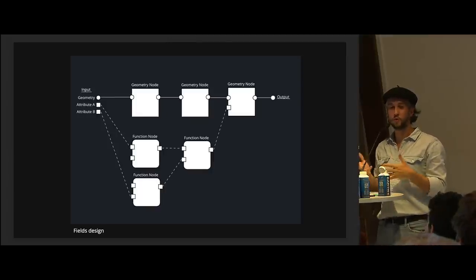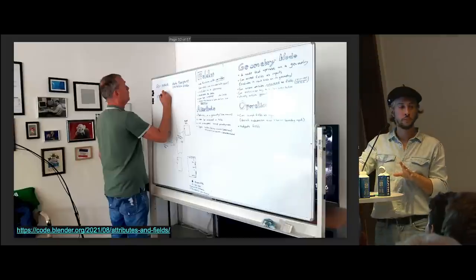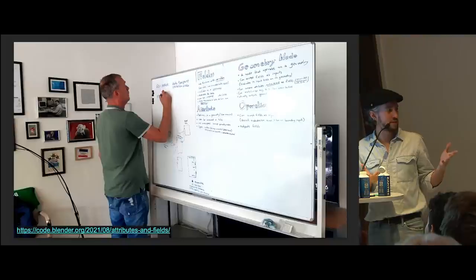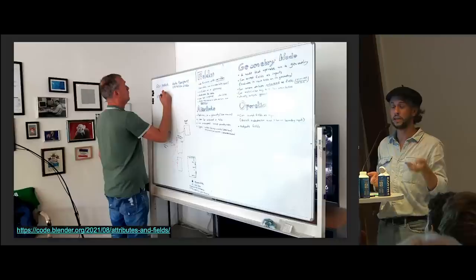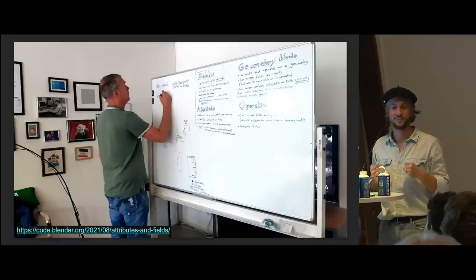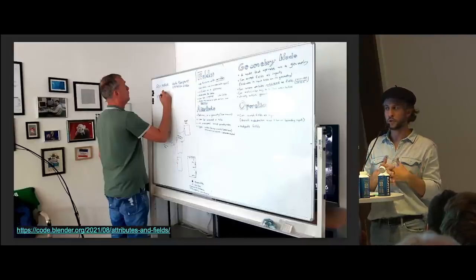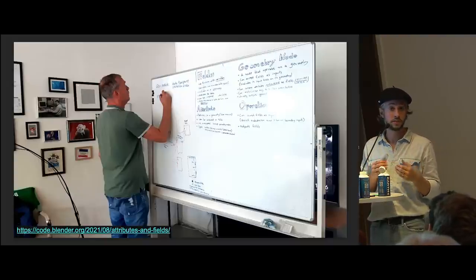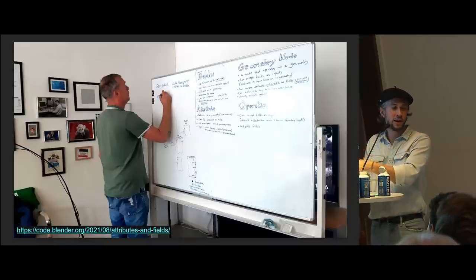We ended up landing on what we have today: the so-called field design. I won't go over it specifically — you can read all about it on the blog, and it's what we have in Blender. I'll come out publicly and say that so many times I was saying to Jack and Hans: I hate fields. Because I know it can work, but I also know it's mind-boggling. But it's always a trade-off — it allows people to do more, and if they know what they're doing, it's even more intuitive. It just has a mental model which is more abstract than simple data in, data out.